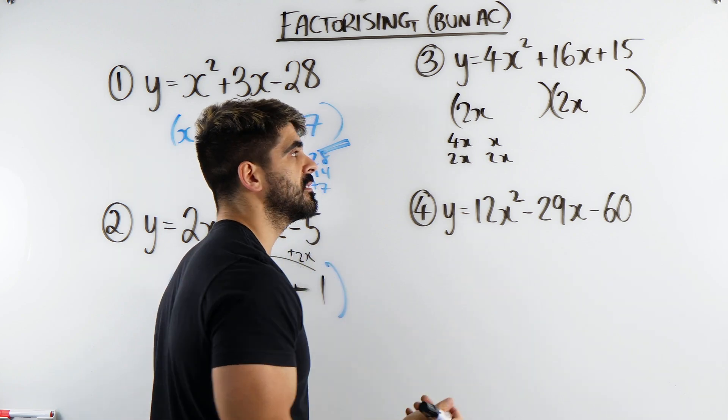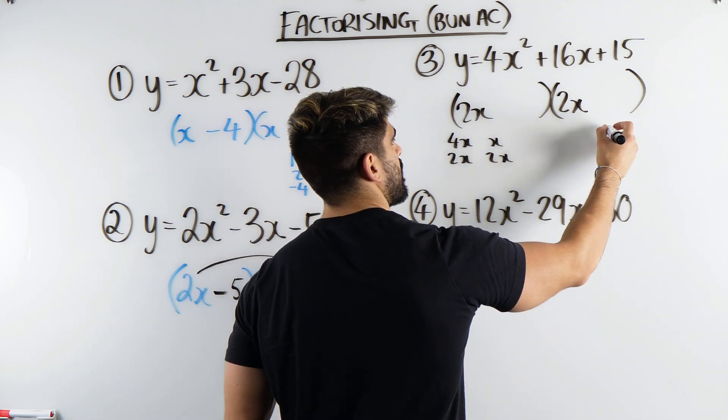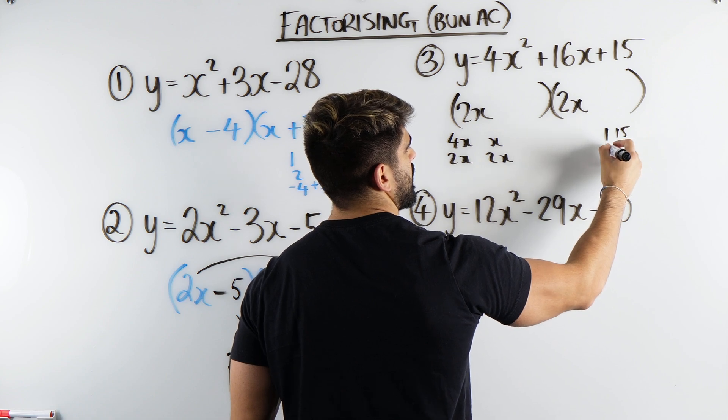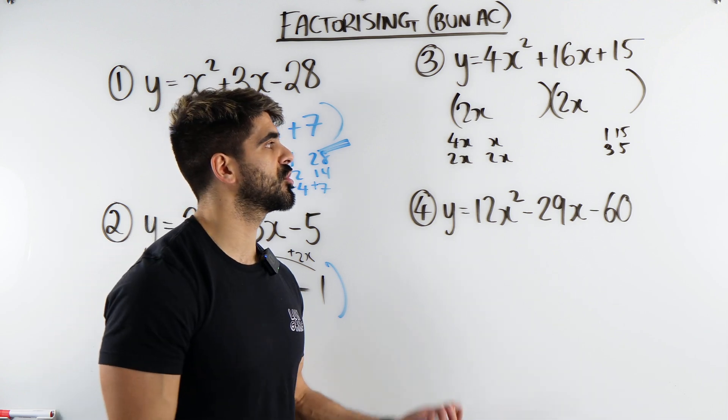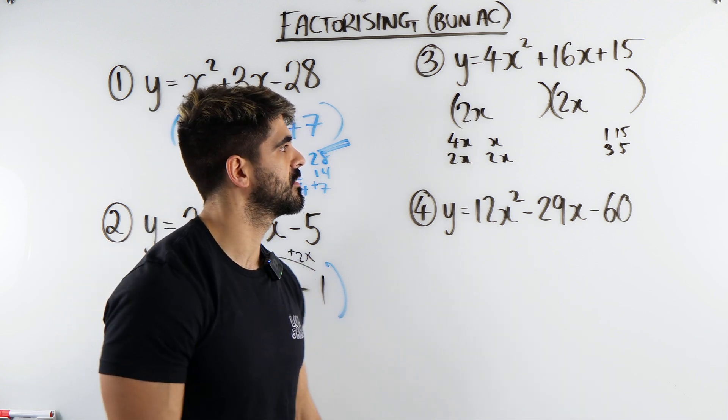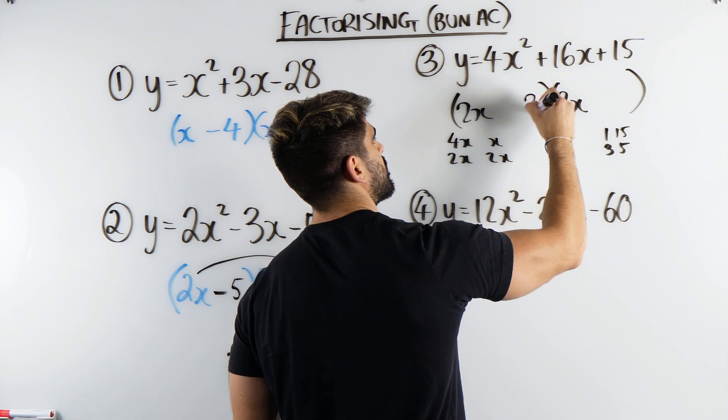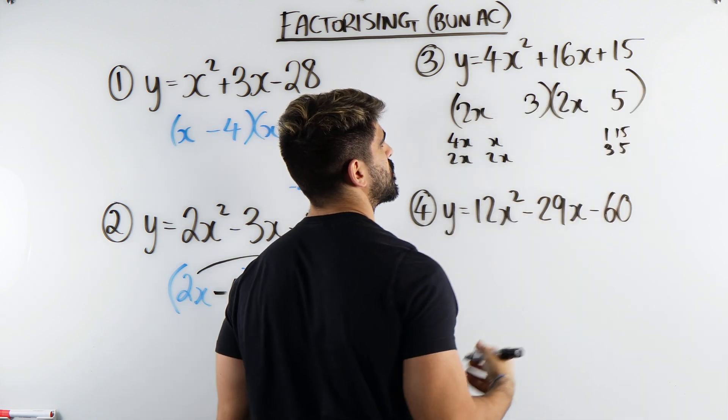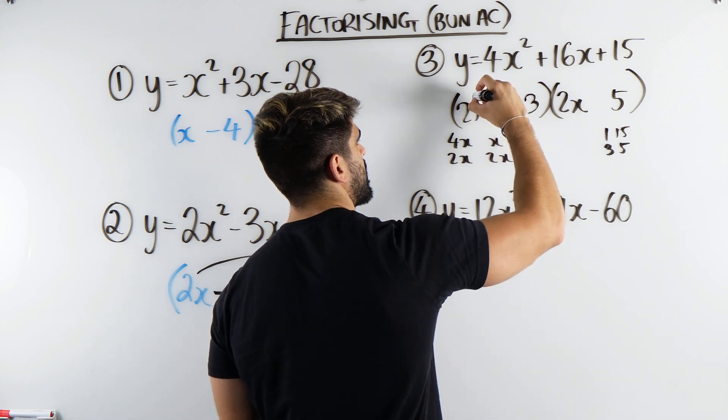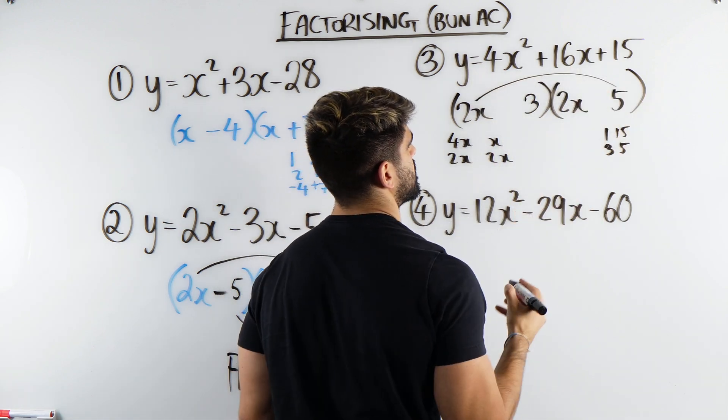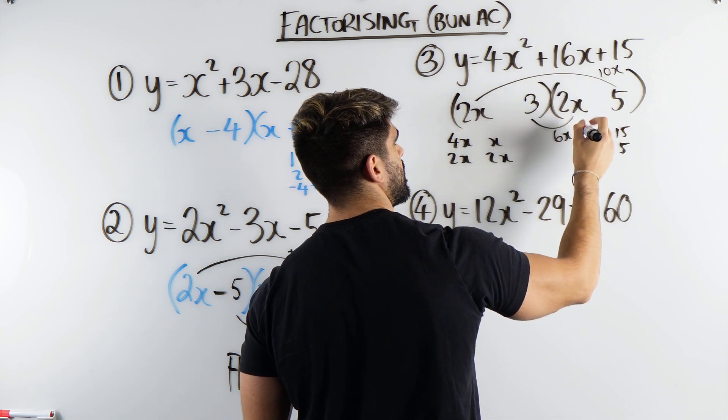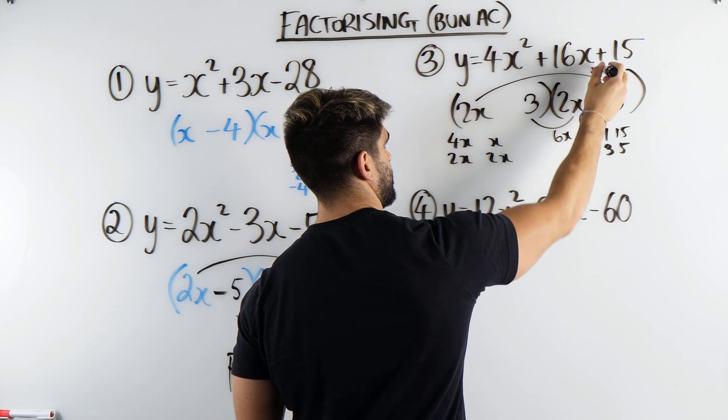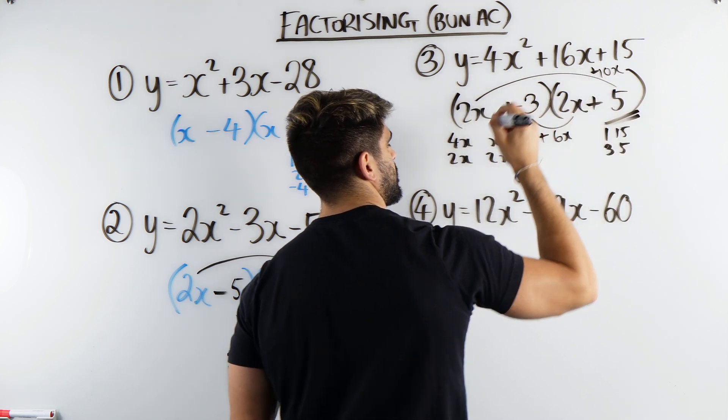Now 15, there is also a couple of options. We have 1 and 15, and we have 3 and 5. Again, choose the option that's closest together first. I'm going to try 3 and 5. Now let's do our oi oi. So we have 2x times 5, that's 10x, and this gives me 6x. Is it possible to make 16? Absolutely. It's factorized.